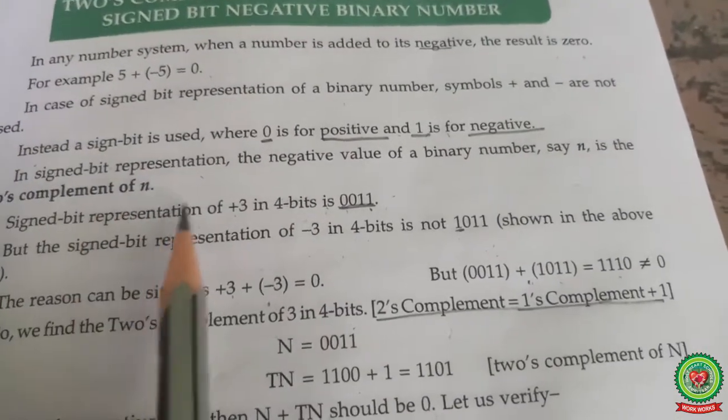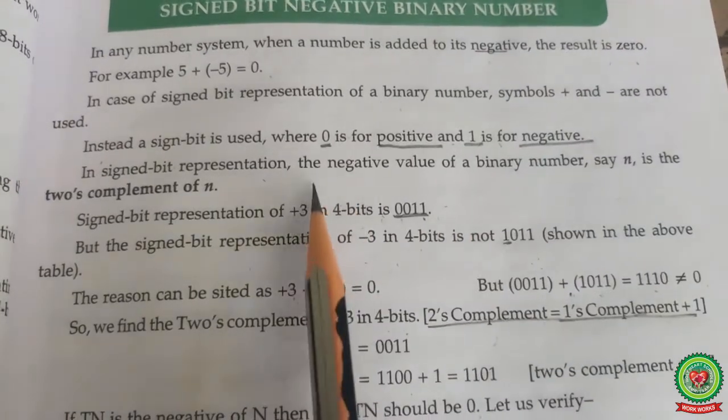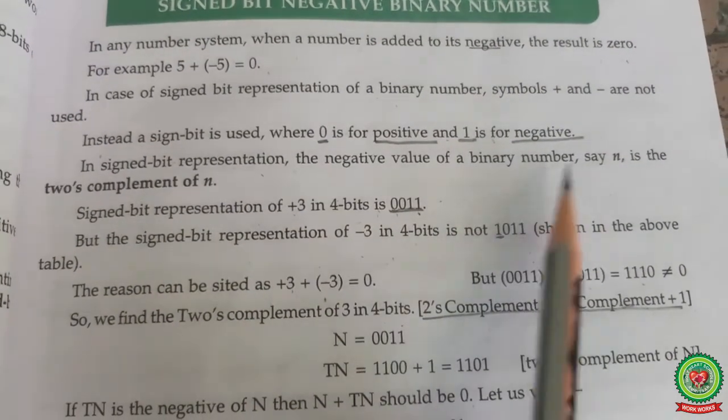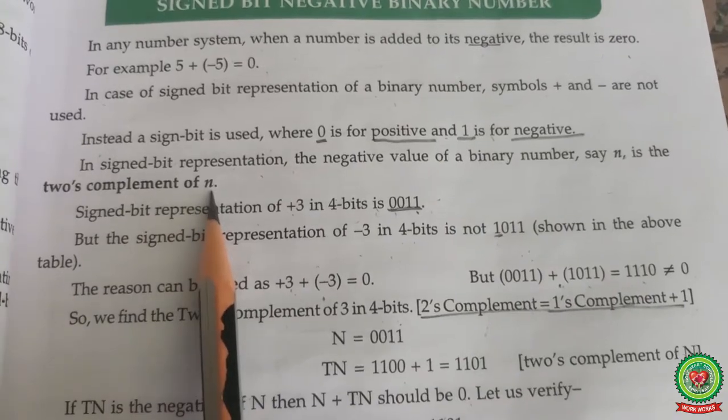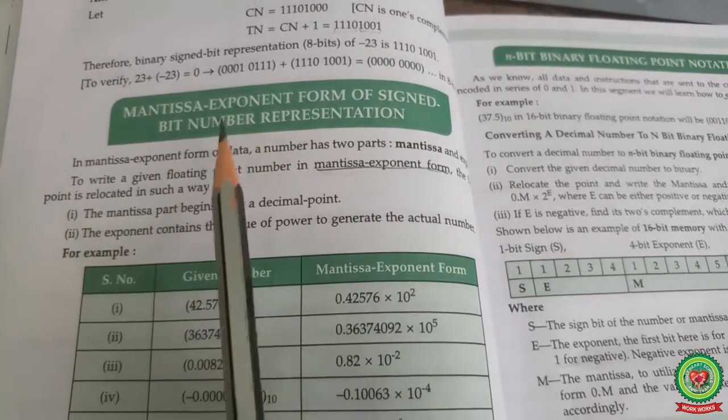In a signed bit representation, the negative value of a binary number N is the two's complement of N. Next topic is mantissa exponent form of signed bit number representation.